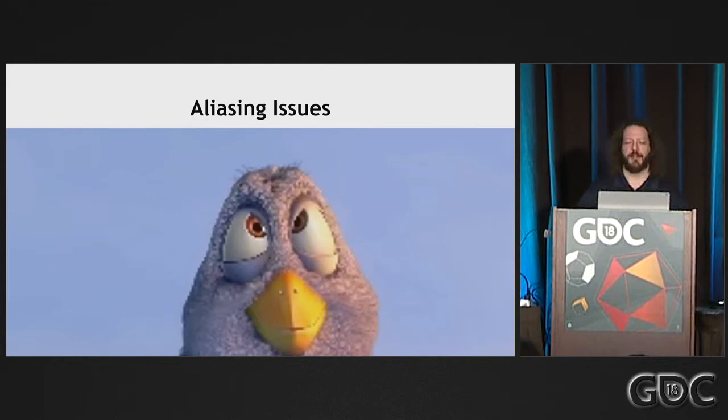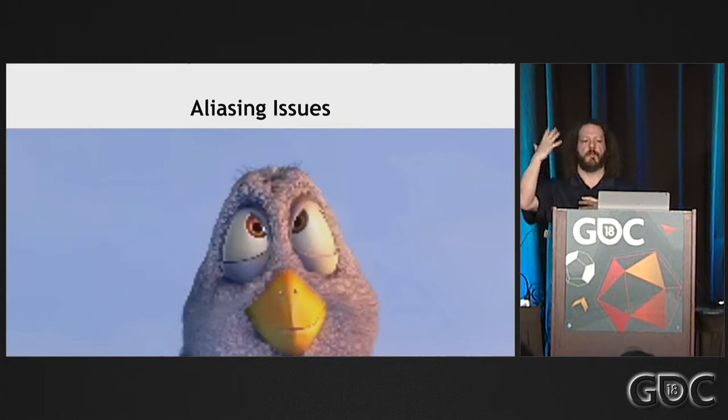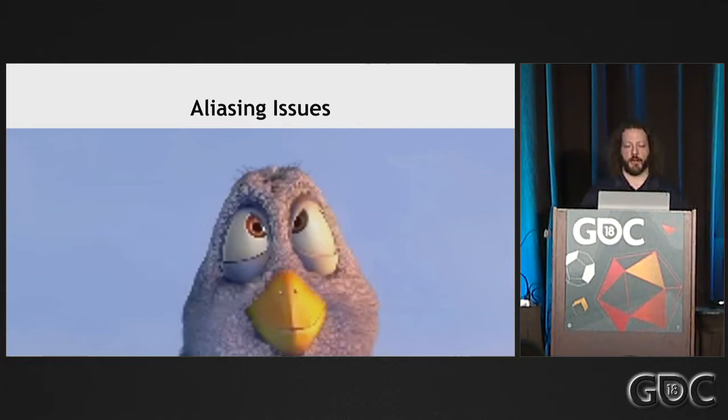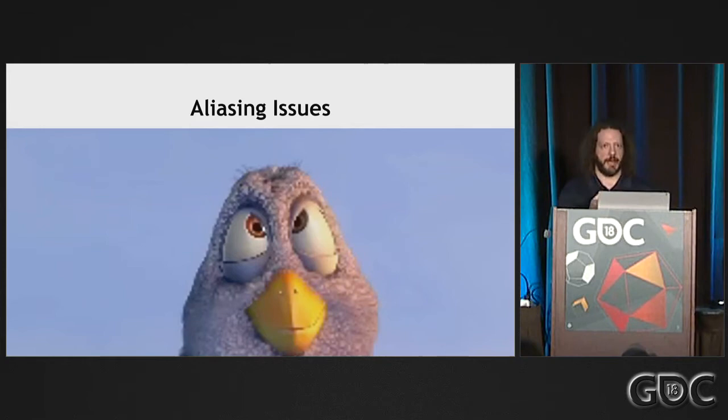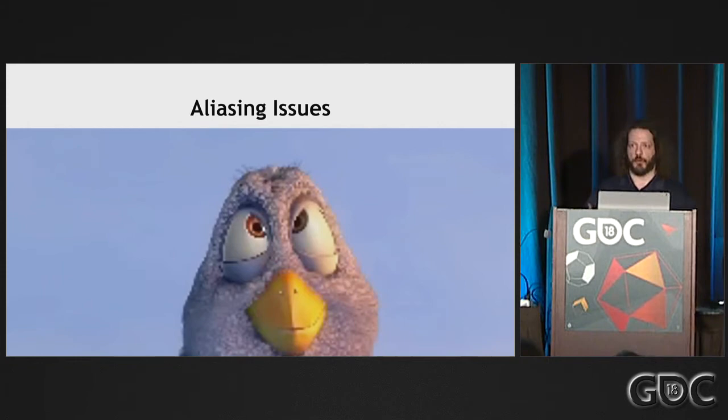Many older games use cut scenes rendered at low resolution using the game engine. In some cases, the original assets are no longer available, so we need to go further and do video super-resolution. We took Big Buck Bunny — a nice open-source video — and purposefully lowered the resolution to simulate the aliased effect of an older cut scene, then applied the super-resolution network to clean it up.